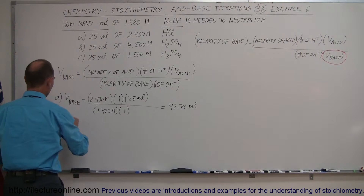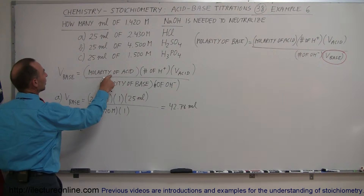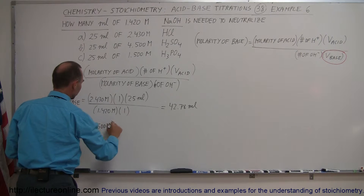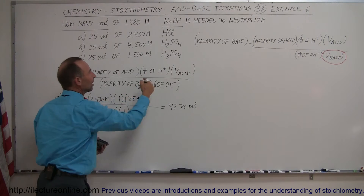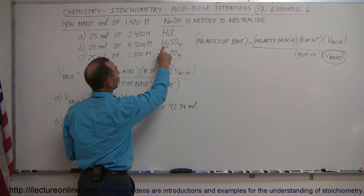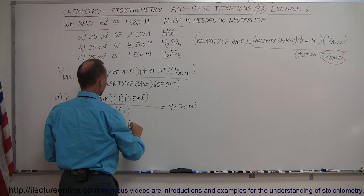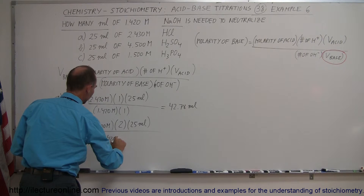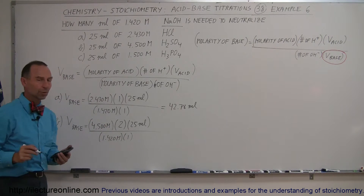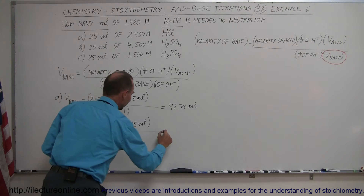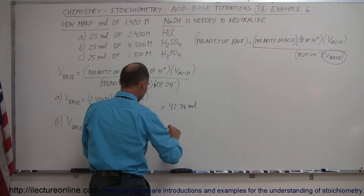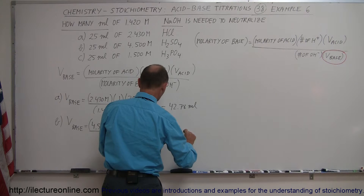Now we do the same for part B. The volume of the base equals the molarity of the acid — 4.500 moles per liter — times the number of hydrogen ions produced per molecule. Sulfuric acid produces two hydrogens, so we put a 2 there, and the solution is still 25 milliliters, divided by the molarity of the base, 1.420 moles per liter, and only one hydroxide ion per molecule. So 4.5 times 2 times 25 divided by 1.42 equals 158.45 milliliters.